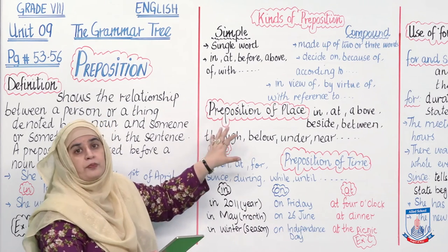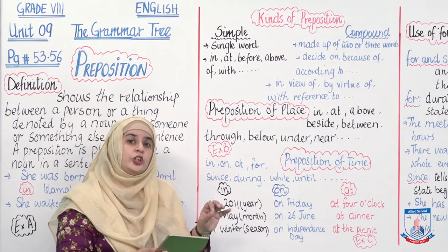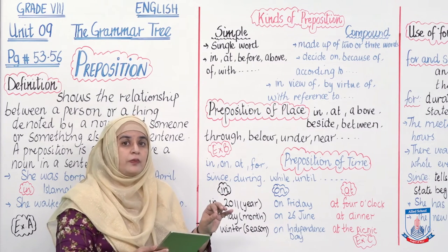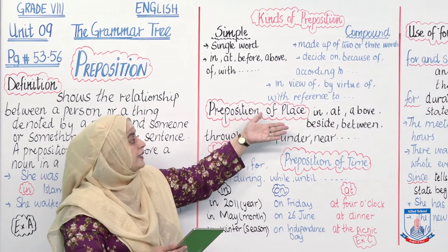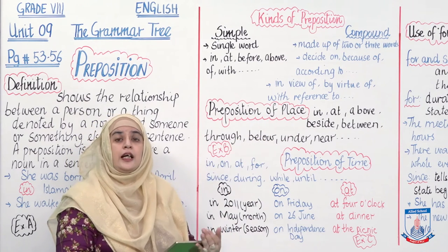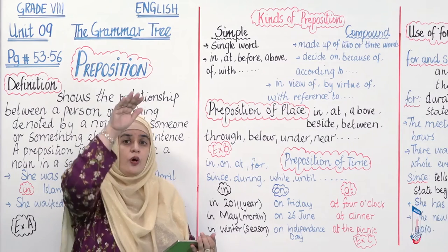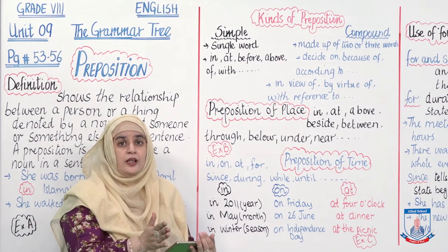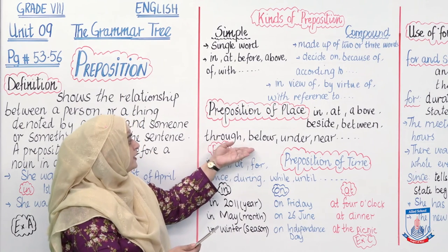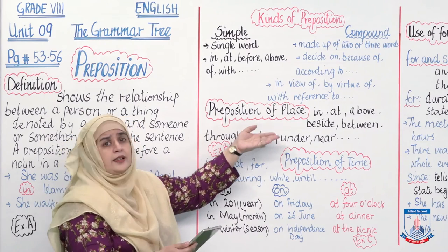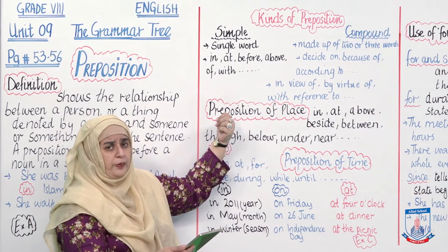Sab se pehle aati hain prepositions of place. Ye bataati hain ke position kisi bhi subject ya verb ki kisi jagah kya hai. Iski examples hain: in, at, above, beside, between — yaani ke subject hai, object hai, it's in, it's on, it's beside, it's between — where? Aur further examples: below, under, near. Ye sab prepositions of place ki examples hain.